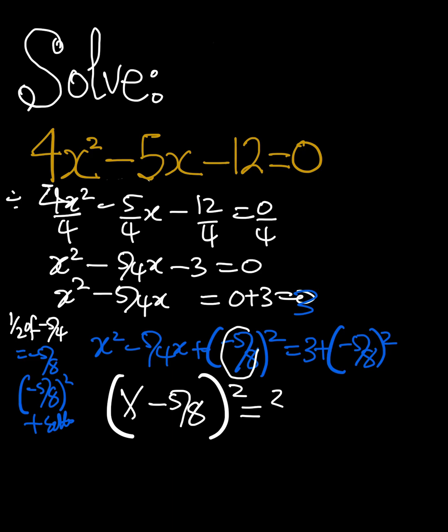When we simplify here, we're getting 3 plus 25 over 64. Negative 5 squared, 8 squared. And then when we simplify that...